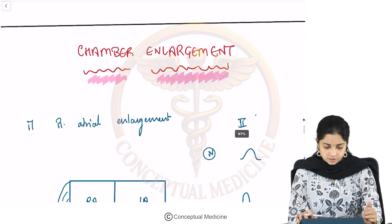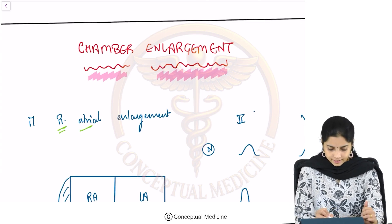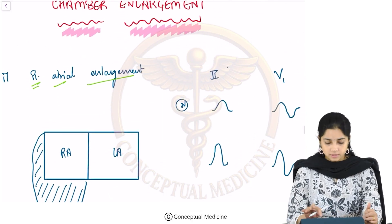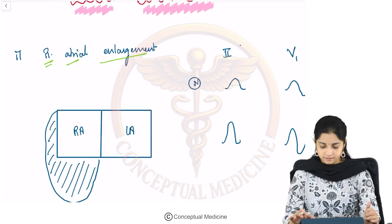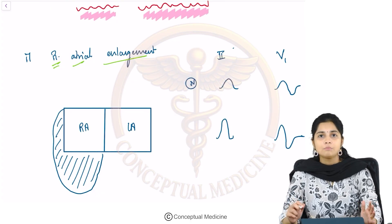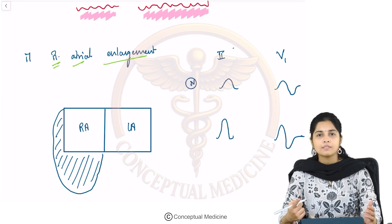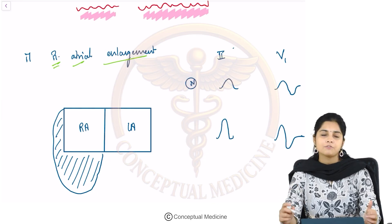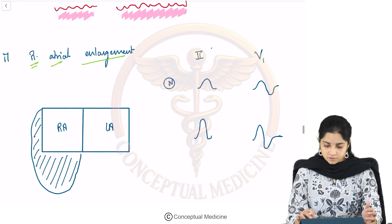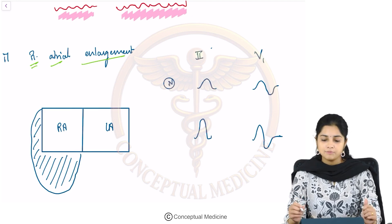The first chamber enlargement ECG we will be looking at is right atrial enlargement. This is the RA and LA — how does the ECG change when there is a right atrial enlargement? We know that atrial depolarization on the ECG is shown by the P wave. The initial upstroke is due to the depolarization of the RA, and the later half of the P wave is due to depolarization of the LA. Which are the two leads in which you look for appreciating the morphology of the P wave?